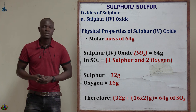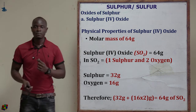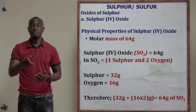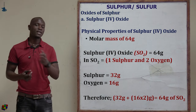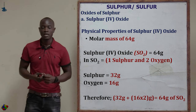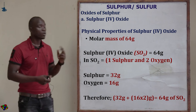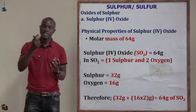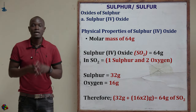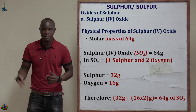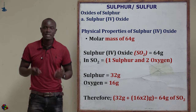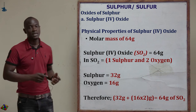Sulfur(IV) oxide is highly soluble in water and has a molecular mass of 64 g/mol. This is because the mass of sulfur is 32 g and one oxygen atom is 16 g. The formula is SO2, so we have one sulfur plus two oxygens: 32 + (16 × 2) = 32 + 32 = 64 g/mol.